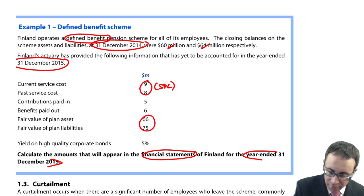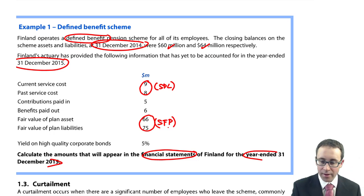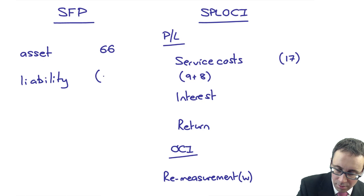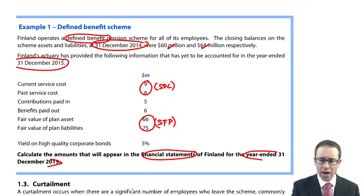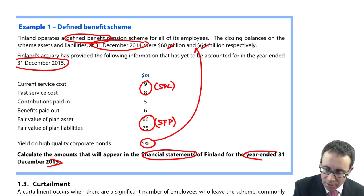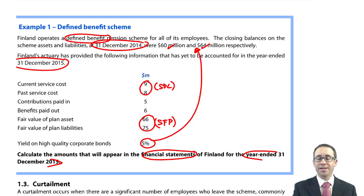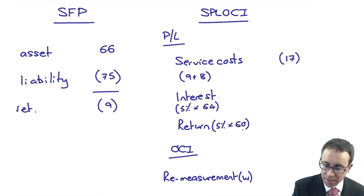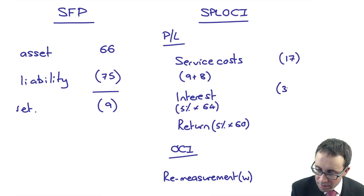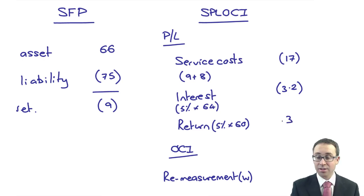I've got the fair value of the plan assets and the fair value of the plan liabilities — those are going to appear on the SFP as 66 and 75, giving a net pension asset of nine. We're also told that the yield on high quality corporate bonds is 5%. So assuming all transactions take place at the end of the year, you apply that 5% to the assets and liabilities. The interest expense is 5% of 64, which is 3.2, and the return on the asset is 5% of 60, which is 3.